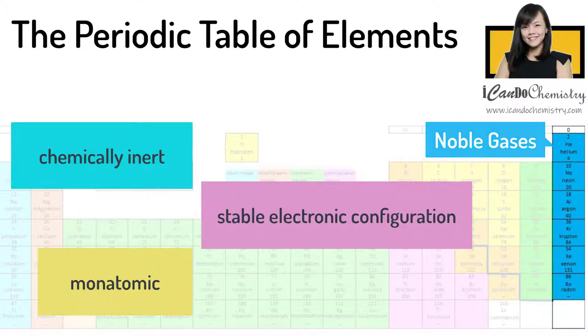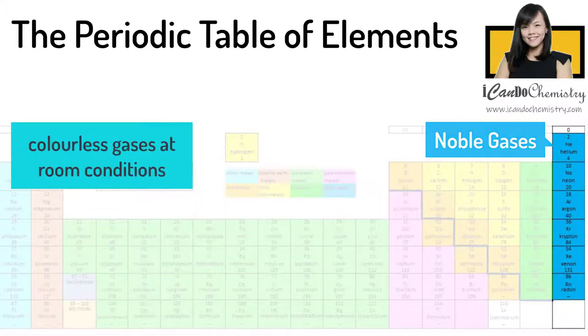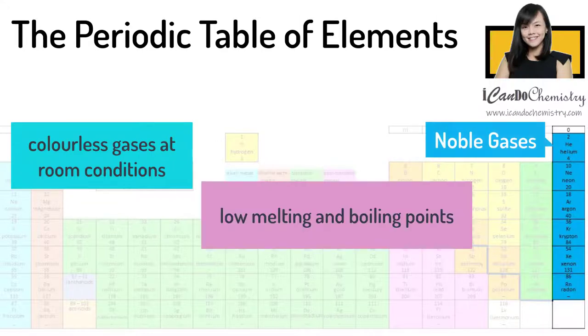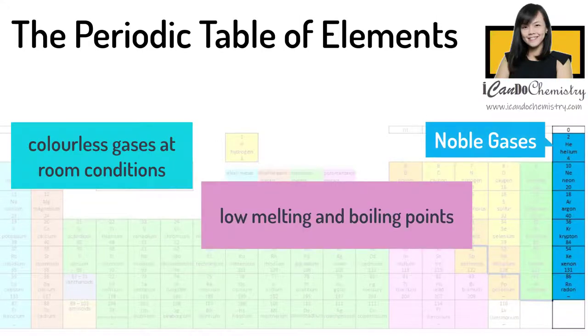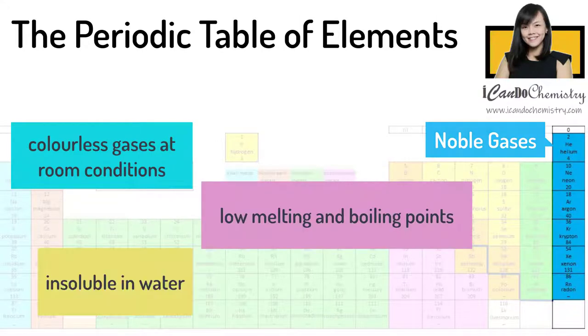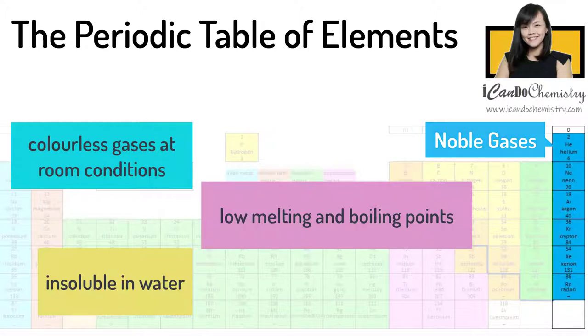All the group 0 elements are colourless gases at room conditions. They have very low melting and boiling points. They are also insoluble in water.